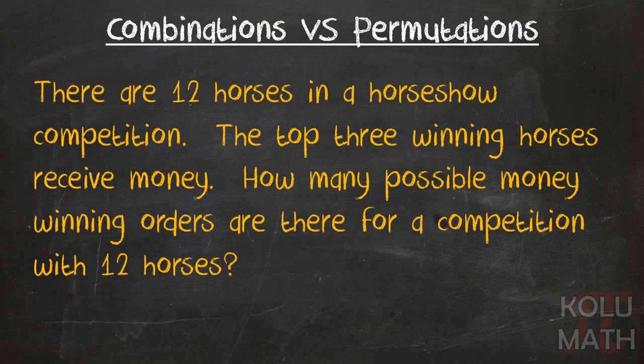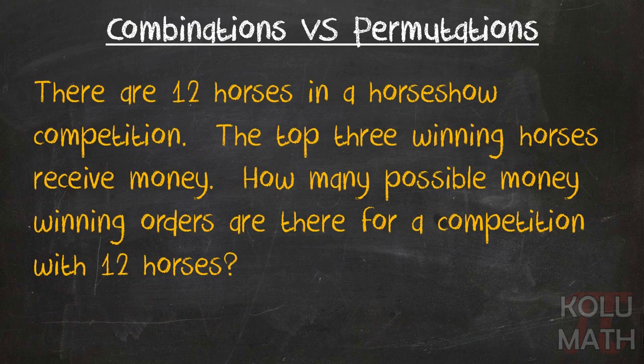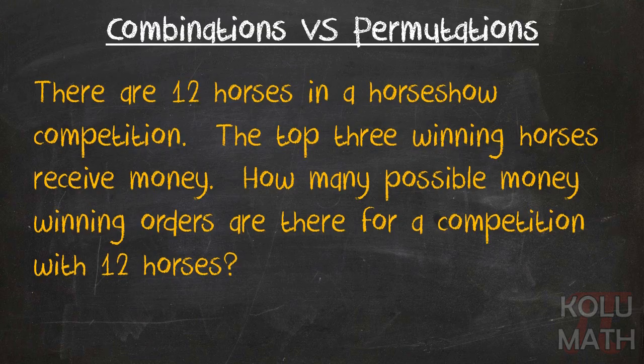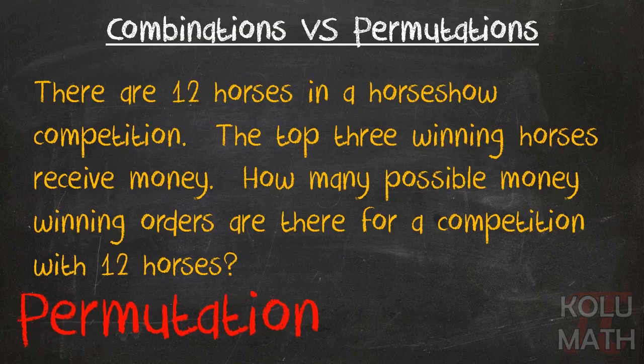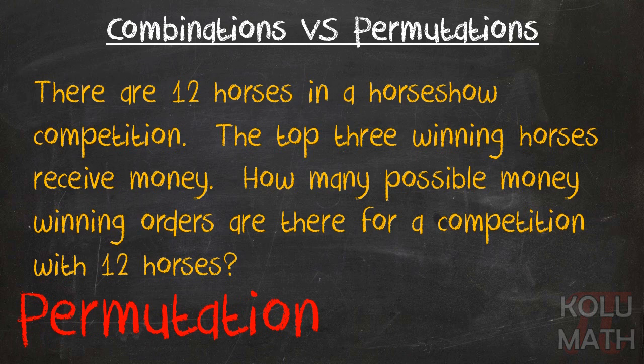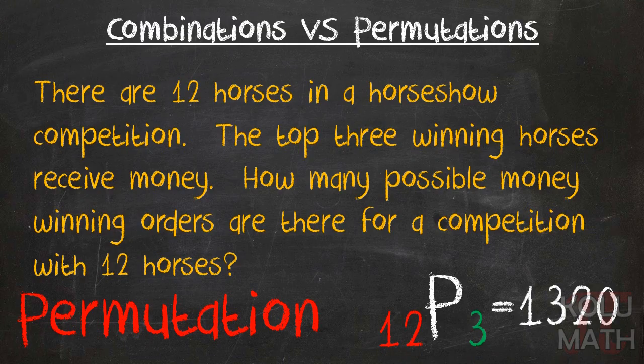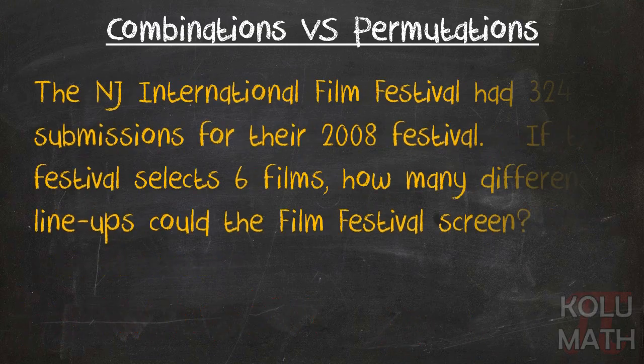Let's take a look at another one. There are 12 horses in a horse show competition. The top three winning horses receive money. How many possible money-winning orders are there for a competition with 12 horses? Does it matter what position you get in a competition like that? Yeah, if you're in first place, you're going to win more money. So order does matter, we've got what's called a permutation. Since it's a permutation, let's go ahead and use P. 12P3, we get 1320. 12 horses, we're choosing the top three.